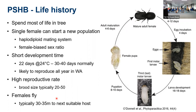There's a very female-biased sex ratio, so if you see a PSHB it's more than likely to be a female coming out of the tree. It has a really short development time for a beetle: at optimum conditions of 24°C, just 22 days, with overlapping generations building up numbers rapidly - normally about a month life cycle. In WA that means they're likely to keep reproducing all year round. They have a high reproductive rate of 20 to 50 offspring. The females fly, usually only 30 to 35 metres, though data suggests maybe up to 400 metres - they go to the next best suitable host.